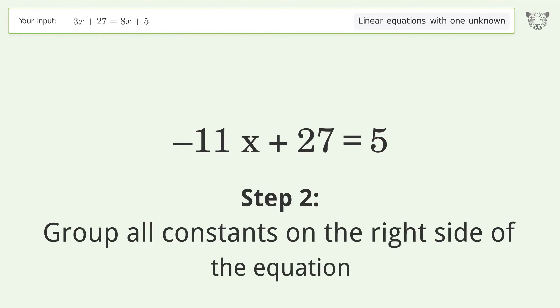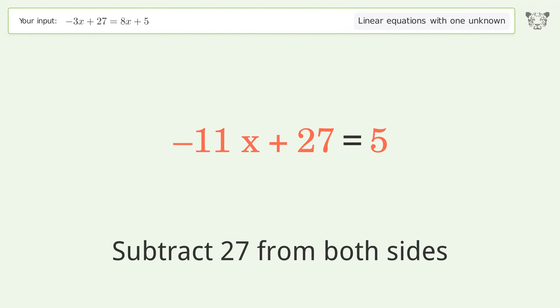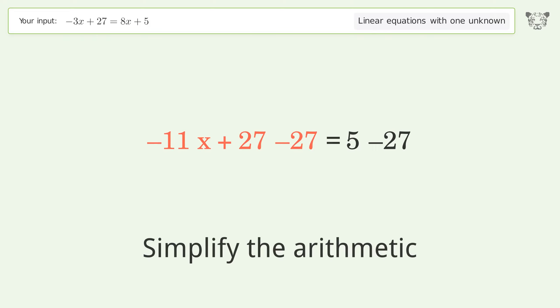Group all constants on the right side of the equation. Subtract 27 from both sides. Simplify the arithmetic.